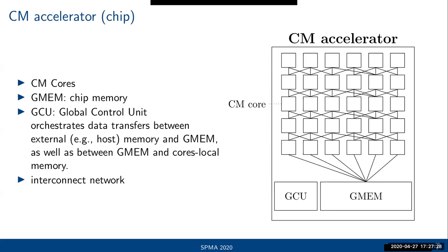The computational memory accelerator has a set of cores interconnected via a network, some on-chip memory, and a global control unit that orchestrates data transfers between external memory (e.g., host memory) and chip memory, as well as between chip memory and the different cores that perform computation.